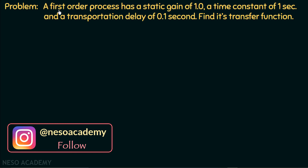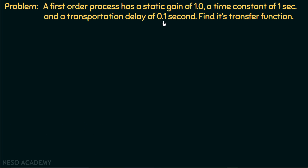In this problem, we are given a first order system having a static gain — that is, the DC gain — of 1.0, a time constant of 1 second, and a transportation delay of 0.1 second, and we need to find out its transfer function.